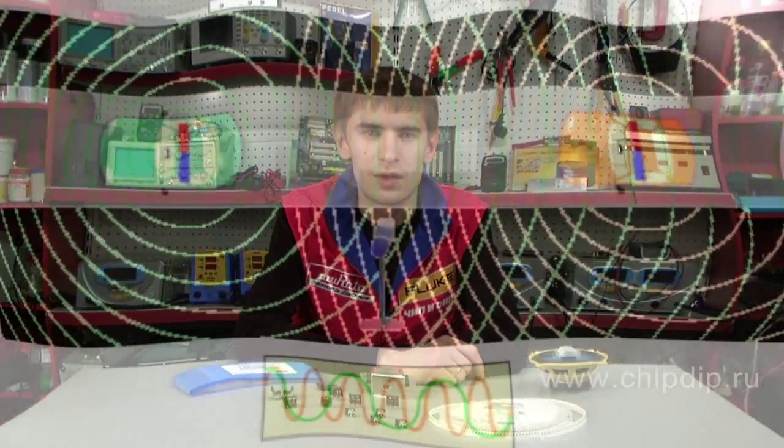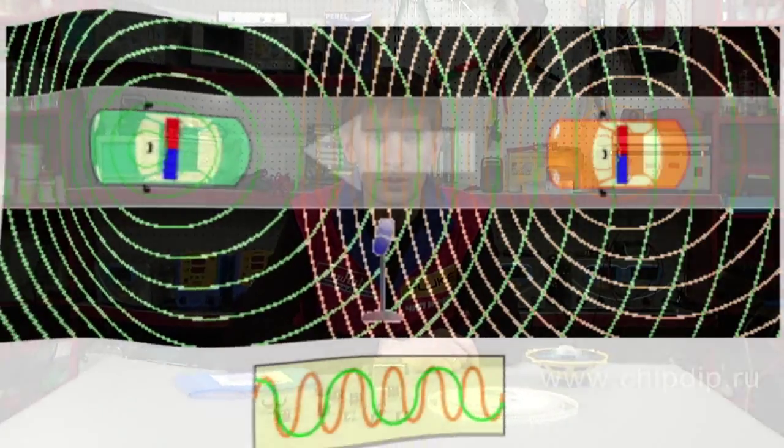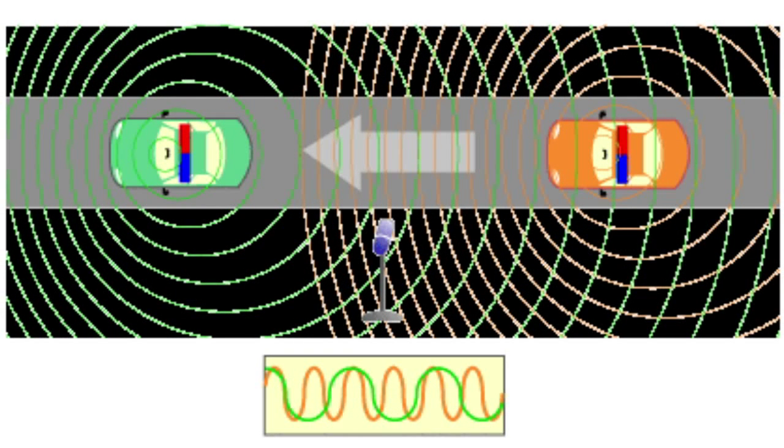This is how you can observe the Doppler effect. As the phenomenon is typical for any oscillatory processes, it is very easy to observe it for sound. Sound wave frequency is perceived by the ear as pitch. You need to wait for a fast-moving car or a train to pass by with a sound, such as a siren or just a beep.